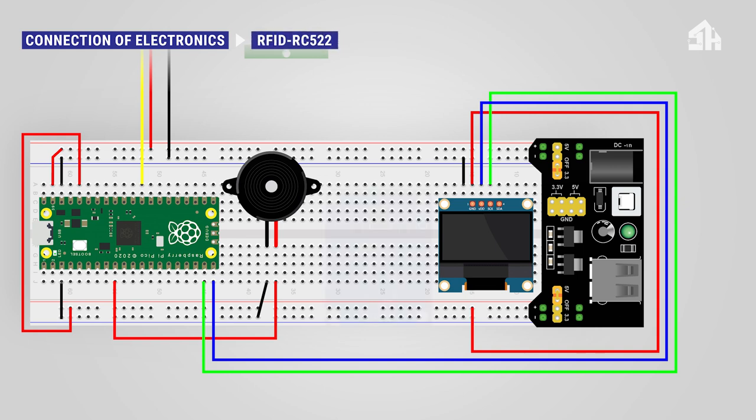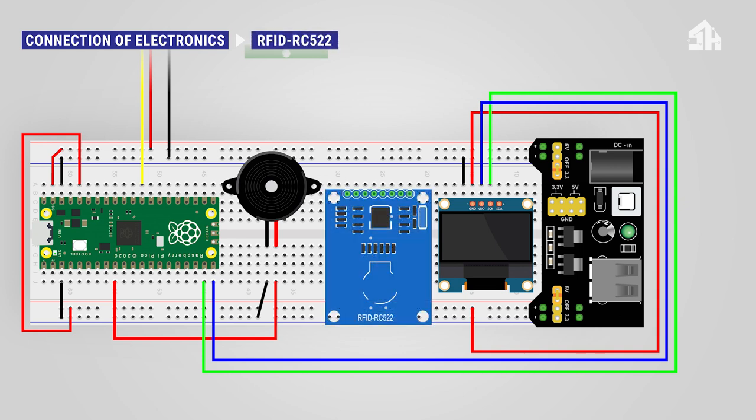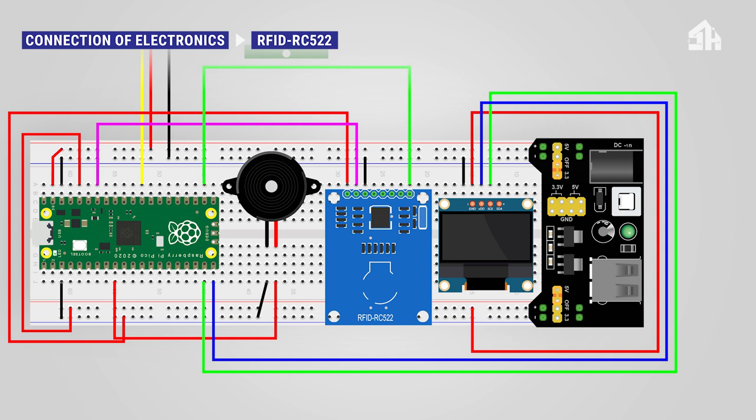For installing the RFID reader RC522, connect the red cable to the 3v3 rail, connect the black cable to the GND rail, connect the purple cable to GPIO 28 pin, connect the green cable to GPIO 17 pin, connect the yellow cable to GPIO 18 pin, connect the orange cable to GPIO 19 pin, and connect the blue cable to GPIO 16 pin.